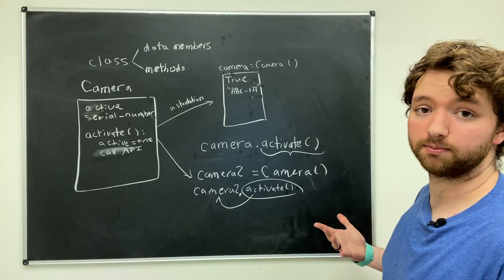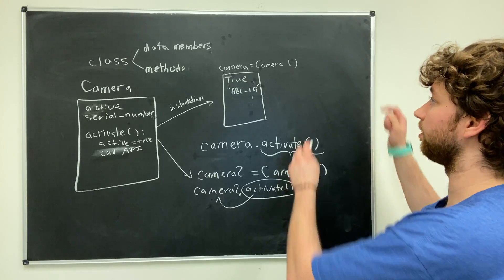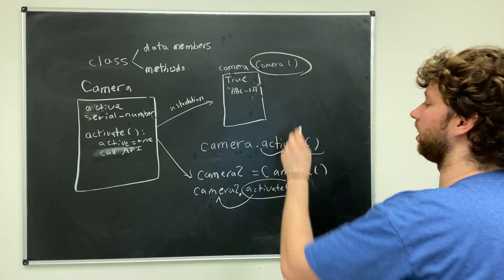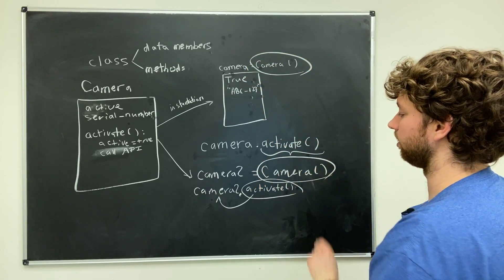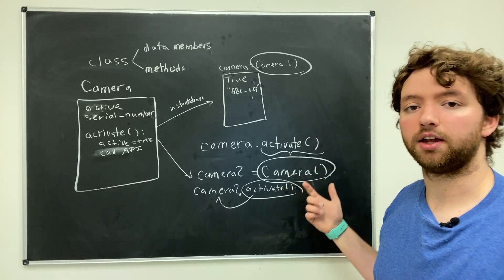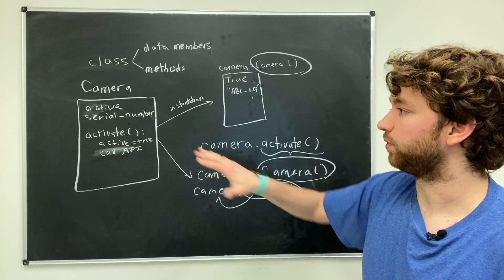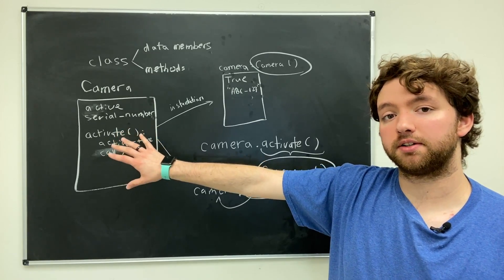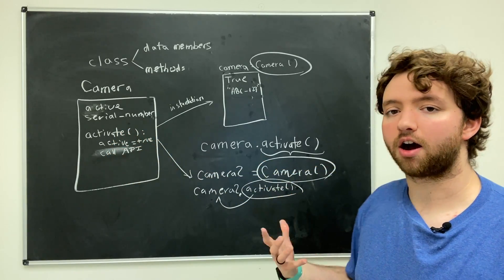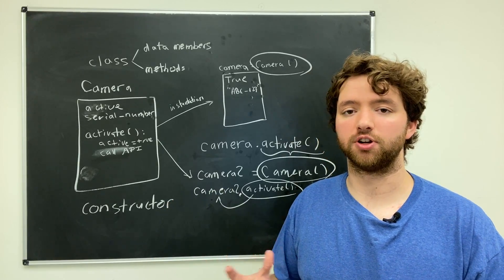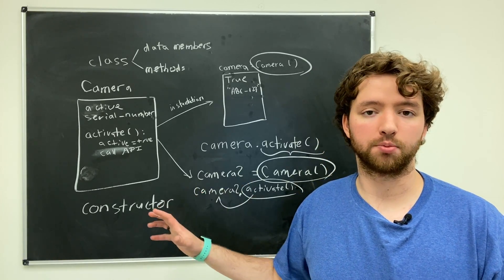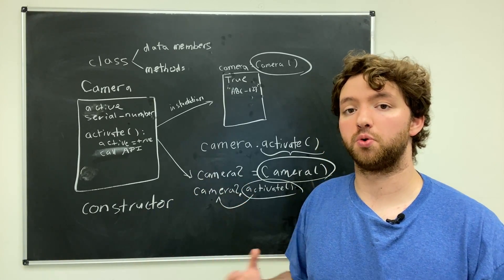Now the next thing you might want to know is these parentheses here when we actually create a new camera—what's going on here? Well, when we create a new camera there is a method that is called. We don't have it defined right here but it does exist, and this method is often called a constructor. This constructor is just a method, so here we can do any kind of processing we need to do in order to have a functional camera object.